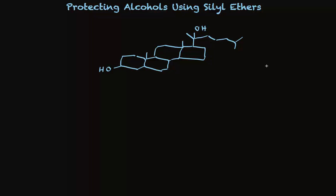Let's say that we'd like to make this molecule. To make drawing these structures easier, let me abbreviate this whole thing by simply saying that we've got a ring and a ring and a ring and a ring without drawing in all the details. We've got some stuff stuck here, we've got an OH here, and we have a tertiary alcohol here.